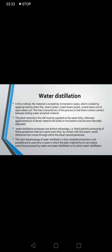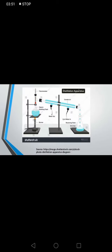Water distillation: in this method, the material is completely immersed in water, which is boiled by applying heat by direct fire, steam jacket, closed steam coil, or open steam coil. The main characteristic of this process is that there is direct contact between boiling water and plant material. In this diagram, you can see the first step where vapor is distillating through the flask and the burner below it is providing the temperature.